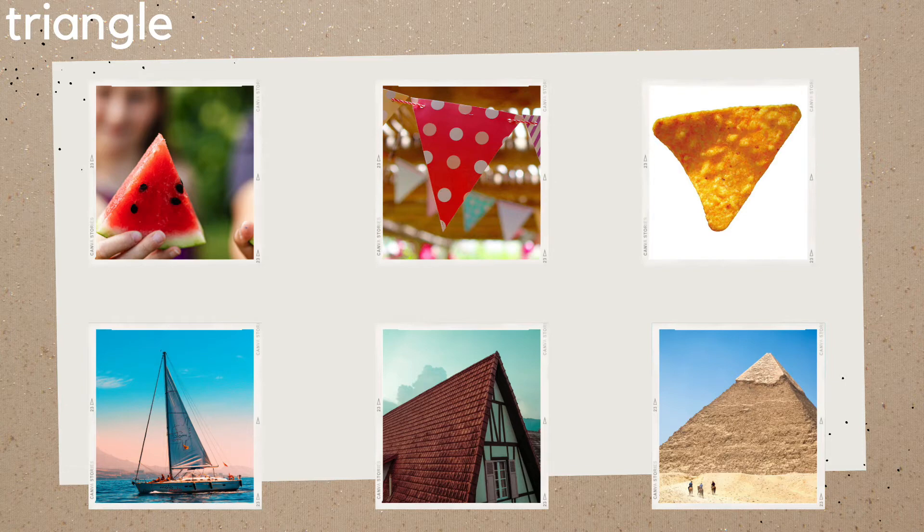Here we have a watermelon slice, a pendant, a Dorito, a sailboat, the roof of a house, and a pyramid. These are all triangles.